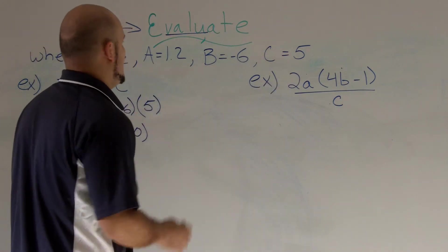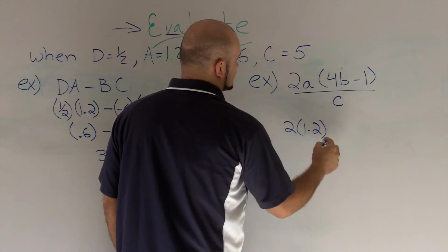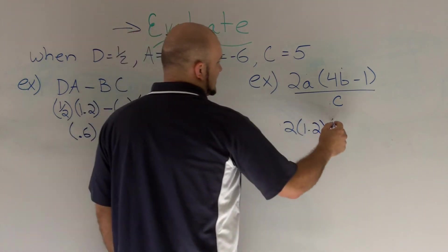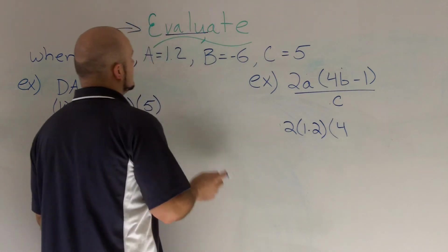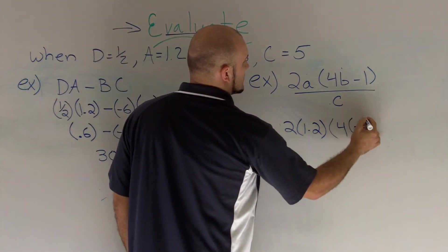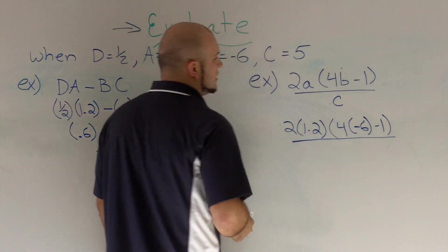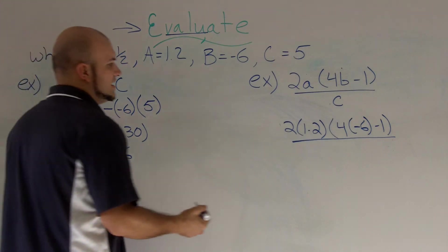So we have a lowercase A. We know A equals 1.2. So I'm going to do 2 times 1.2 times 4 times B, which is a negative one. So we have 6 minus 1. Put back my rash, my division. And C equals 5.